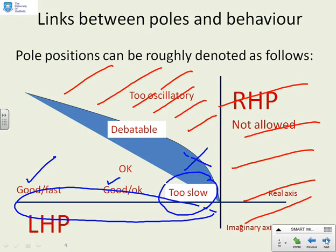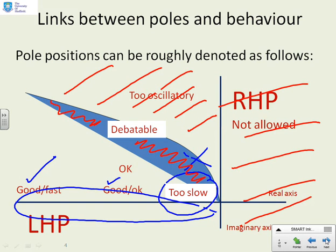There's also a region in the middle shaded blue, where we've used the word 'debatable'. It's got an imaginary part so there will be some oscillation, but there's also a real part so there's convergence. Somewhere in here is where the oscillation begins to dominate the convergence, as opposed to the convergence dominating the oscillation. The exact regions which are acceptable and not acceptable are not clear cut because it depends on many issues, and that's why this area is somewhat fuzzy.